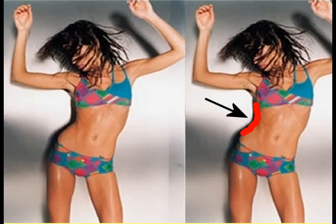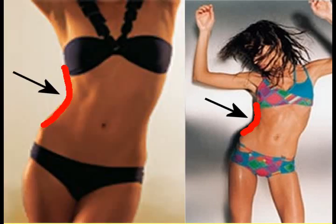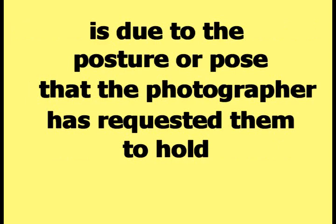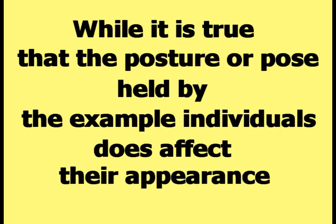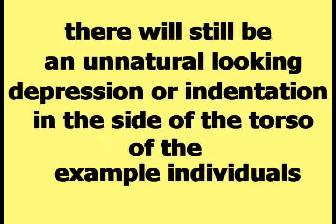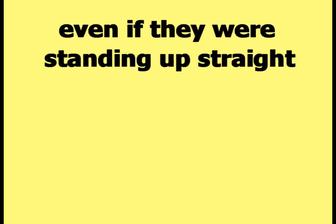This picture shows an example of what anorexia dent looks like. The right side of the woman's torso has a large depression in it. This picture shows a different example. Some viewers might feel the dent is due to the posture or pose the photographer requested. While posture does affect appearance, according to Happy Theory, there will still be an unnatural-looking depression in the side of the torso even if they were standing up straight.